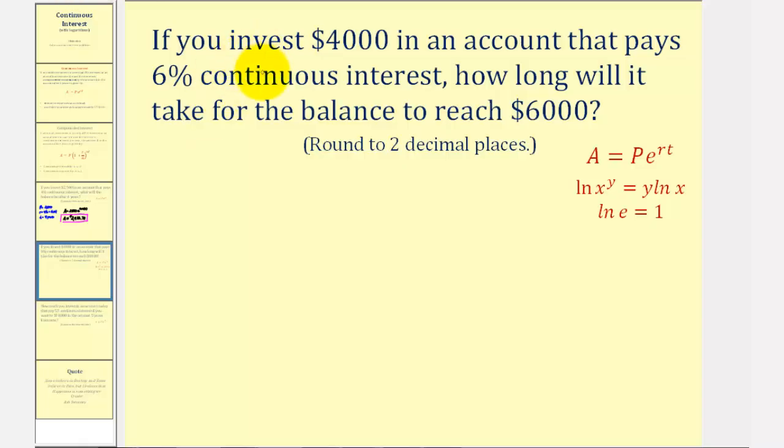So notice in this problem, we're given the principal of $4,000. We're also given the amount after, which would be $6,000. We're given R, and we're trying to find the value of T, the time it would take $4,000 to grow to $6,000.